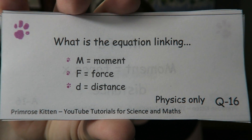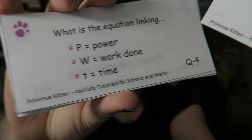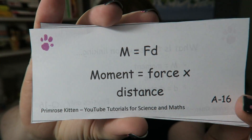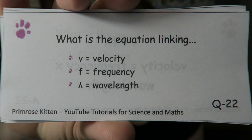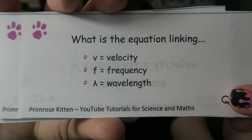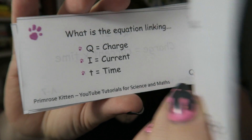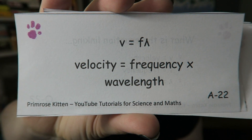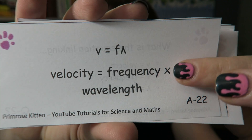What is the equation linking moment, force, and distance? Moment equals force times distance. What is the equation linking velocity, frequency, and wavelength? Velocity, or wave speed, is frequency times wavelength.